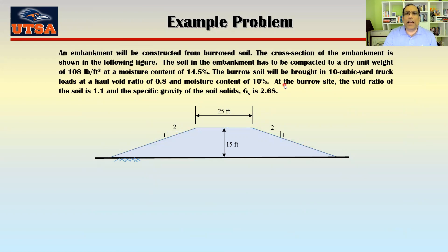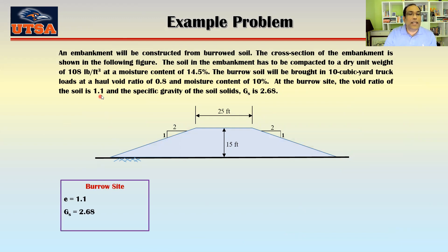At the borrow site, the void ratio of the soil was 1.1 and the specific gravity of the soil Gs is equal to 2.68. There are basically three different sites or areas where the compaction conditions change: the borrow site has a void ratio of 1.1 and Gs of 2.68. When you move soil from one place to another, the specific gravity of the soil solids doesn't change because you are taking the same soil — so Gs stays 2.68.